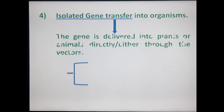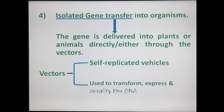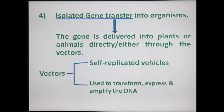The fourth step is isolated gene transfer into organisms. The gene is delivered into plants or animals either directly or through vectors.